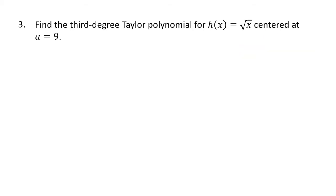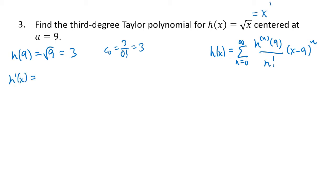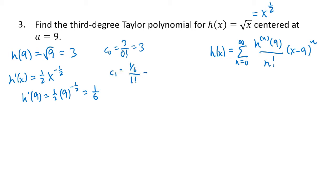One more example: third degree Taylor polynomial for h(x) = √x centered at a=9. The series uses x minus 9 to the n. Plugging in the center: h(9) = √9 = 3, so c0 = 3/0! = 3. The first derivative: writing √x as x^(1/2), h′(x) = (1/2)x^(−1/2). Plugging in 9: (1/2)·9^(−1/2) = 1/6, so c1 = (1/6)/1! = 1/6.